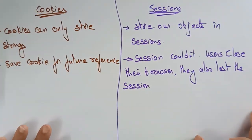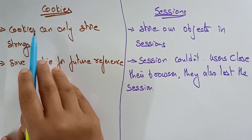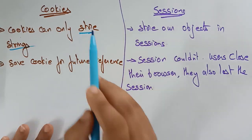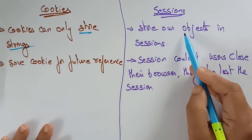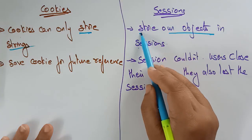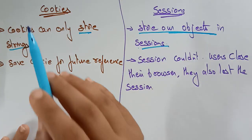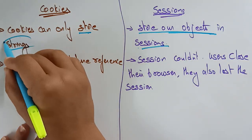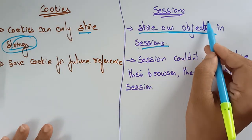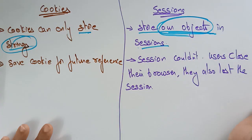Cookies can only store strings — remember that. Whereas sessions store objects. So cookies store only strings and sessions store objects.